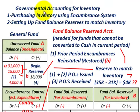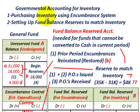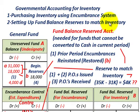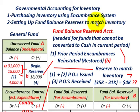What we're going to be going over here is governmental accounting for inventories. We're going to be looking at purchasing inventories using the encumbrance system and concentrating on setting up the fund balance reserves to match our inventory accounts and setting aside funds to match any inventories that we have.